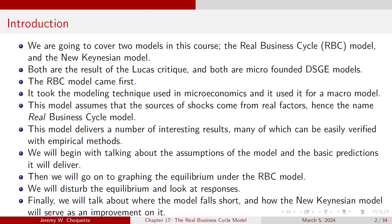Both of these are the result of the Lucas Critique, and both of them are micro-founded dynamic stochastic general equilibrium models. The RBC model came first — think of it as you've got to crawl before you walk. It took a lot of modeling used in microeconomics and expanded it for a macro model. It assumes that the sources of shocks come from real factors, hence the name the Real Business Cycle Model.